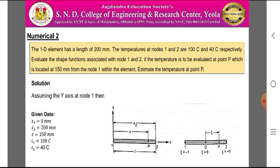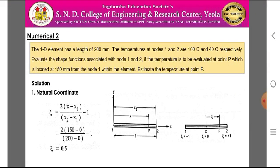It is assumed that the y-axis is at node 1. The given data is: X1 = 0, X2 = 200 mm, X = 150 mm, T1 = 100°C, T2 = 40°C. To obtain the natural coordinate: ε = 2(X - X1)/(X2 - X1) - 1 = 2(150 - 0)/(200 - 0) - 1, which gives ε = 0.5.